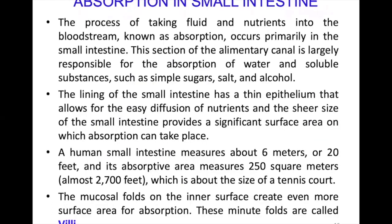The process of taking fluids and nutrients into the bloodstream is known as absorption. The jejunum and ileum are mainly responsible for absorption of water and soluble substances such as simple sugars, salts, and alcohol. The lining of the small intestine is a thin epithelium that allows easy diffusion of nutrients. The human small intestine measures 6 meters, with an absorptive area of 250 square meters — about the size of a tennis court.